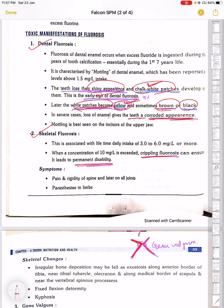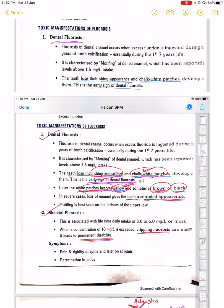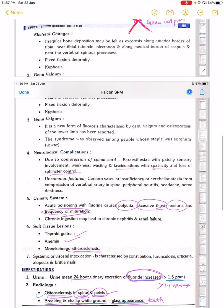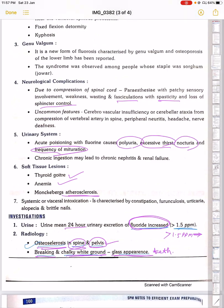Neurological complications occur with fluorosis. What are the neural complications? Paresthesia can occur, fasciculation of muscles, spasticity, and sphincter control loss also occur. These are the neural manifestations.